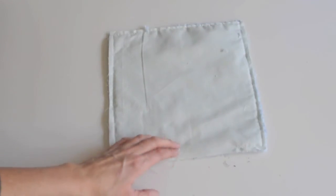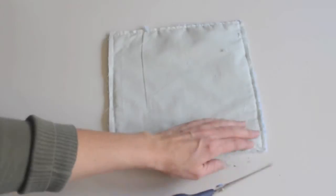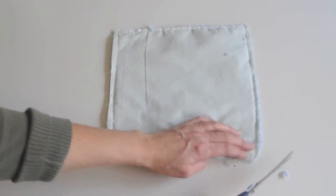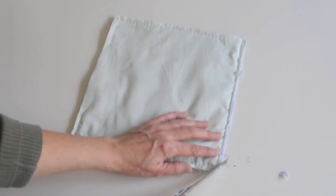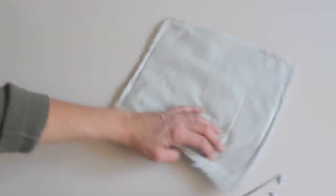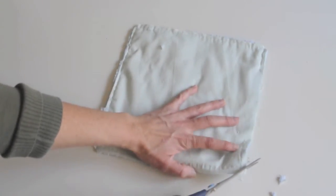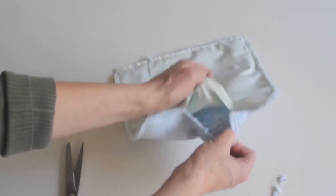This one's been stitched and then you go ahead and you just trim the corners. Just cut off a little bit so that when you turn it, it lays nice. And then you go ahead and turn it.